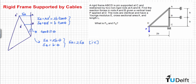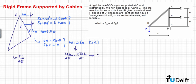Using the force-displacement relationship for an axially loaded member — delta equals PL divided by AE — and applying this to equation 4, we find that FA times L divided by AE equals 2 times FB times L divided by AE. Since the area, modulus of elasticity, and initial length of the cables are identical, this simplifies to FA equals 2 times FB.